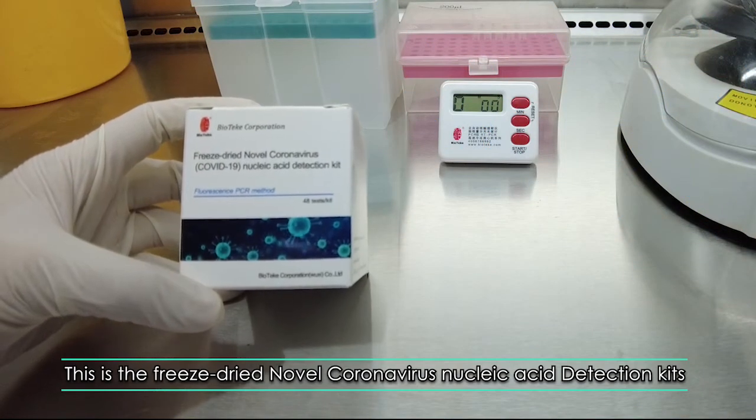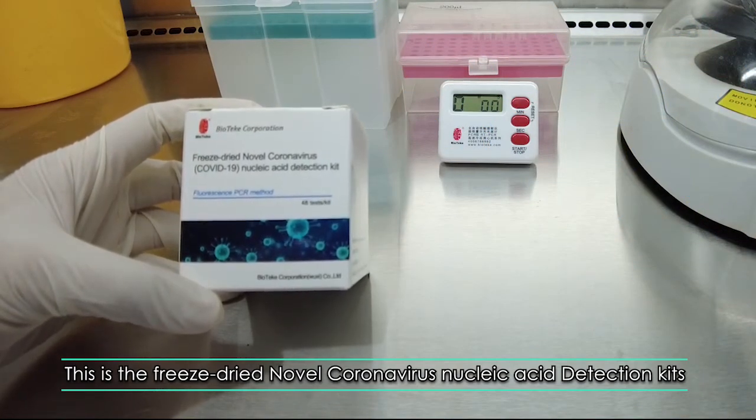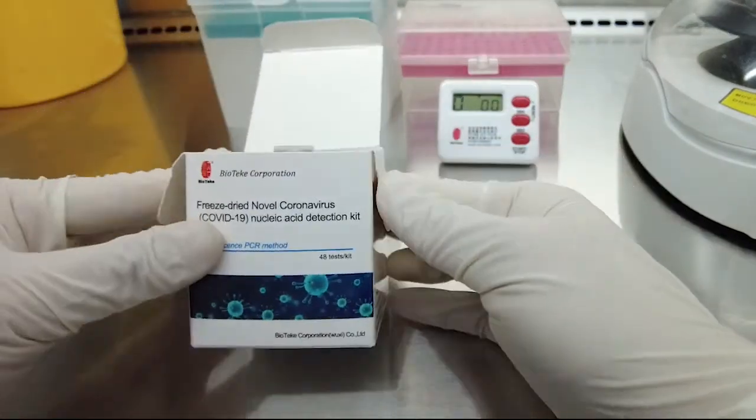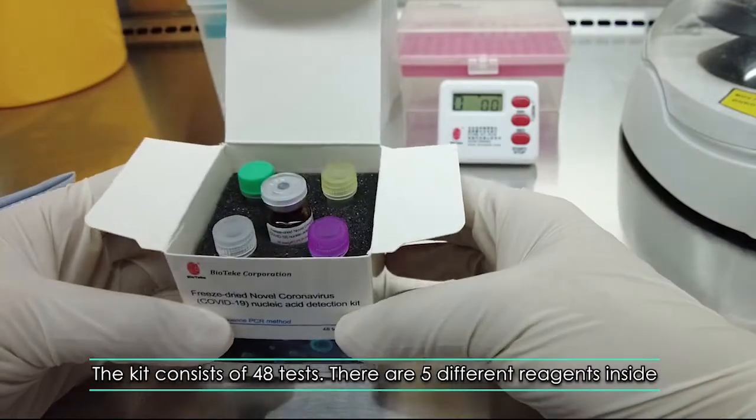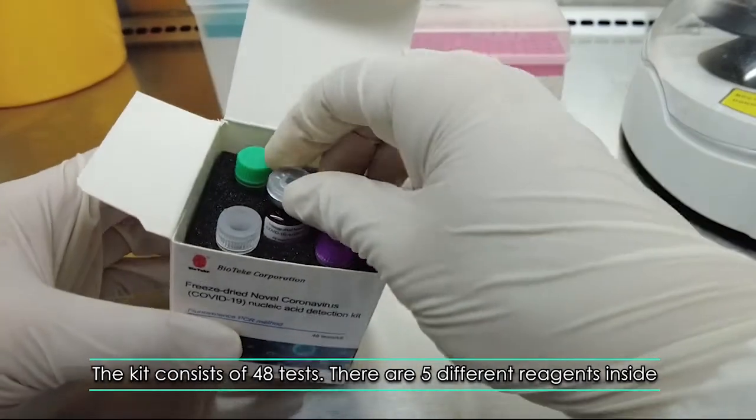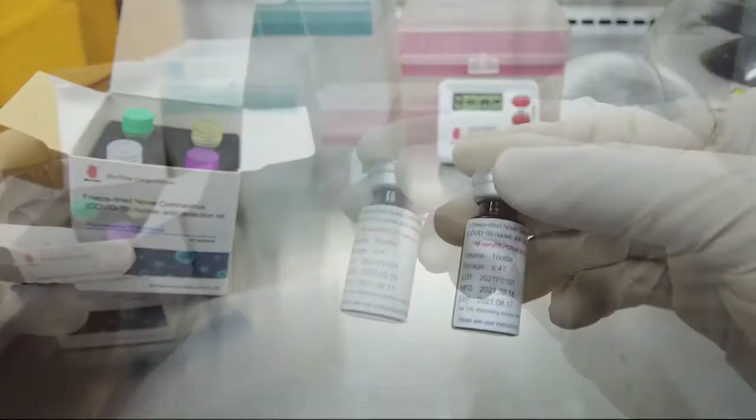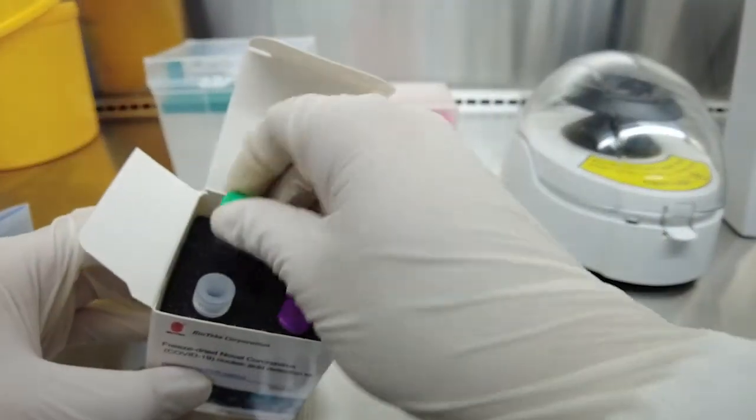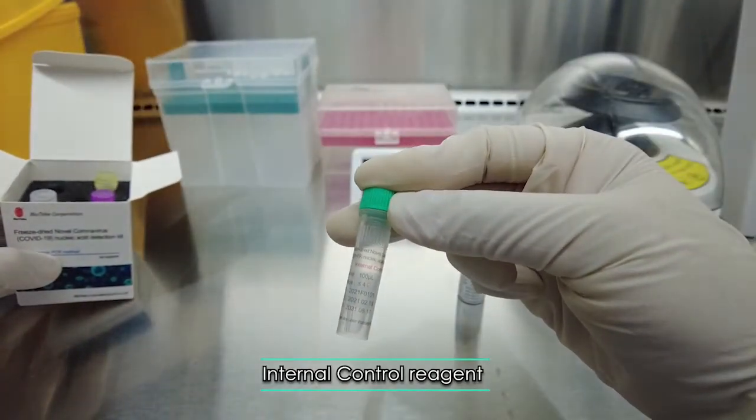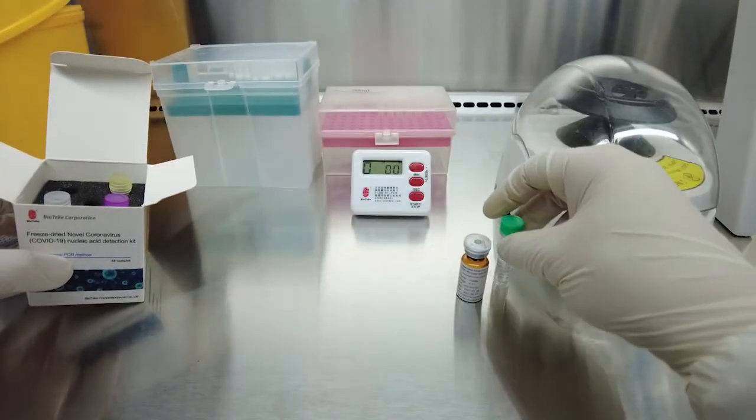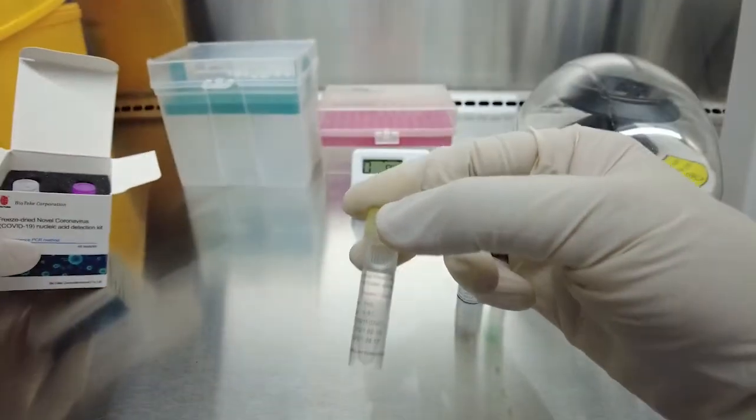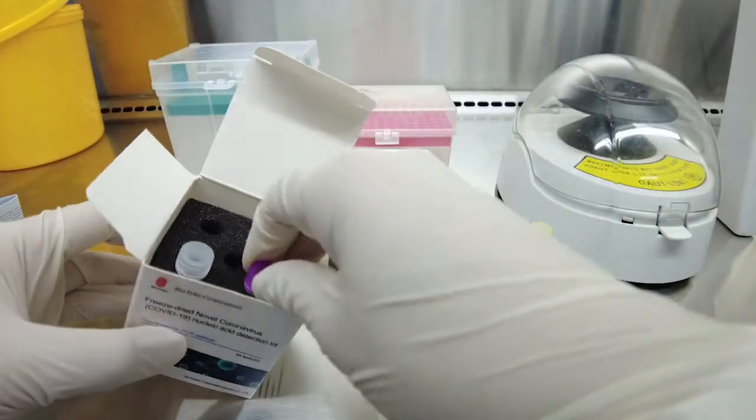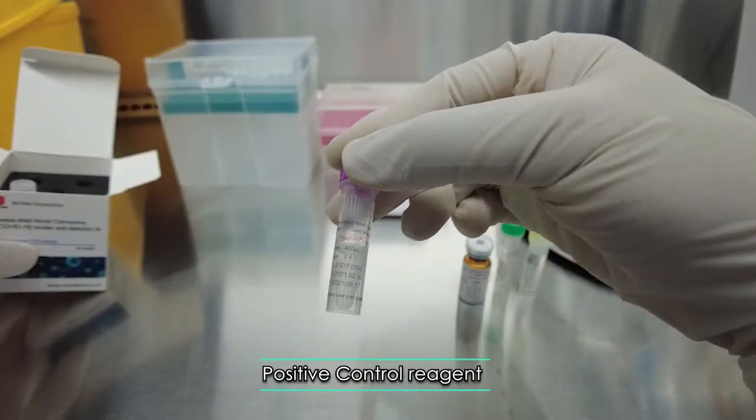This is the freeze-dried novel coronavirus nucleic acid detection kit. The kit consists of 48 tests. There are five different reagents inside: RT-PCR Multipremix Powder, Internal Control Reagent, Negative Control Reagent, Positive Control Reagent.